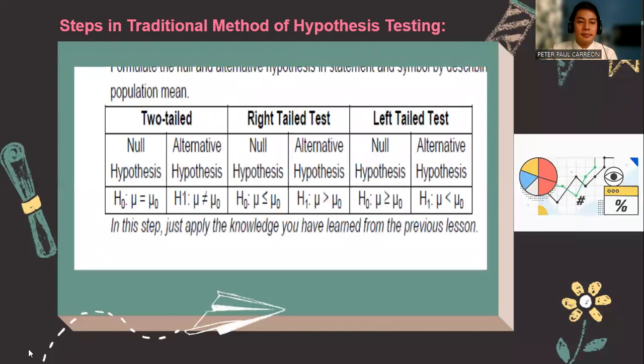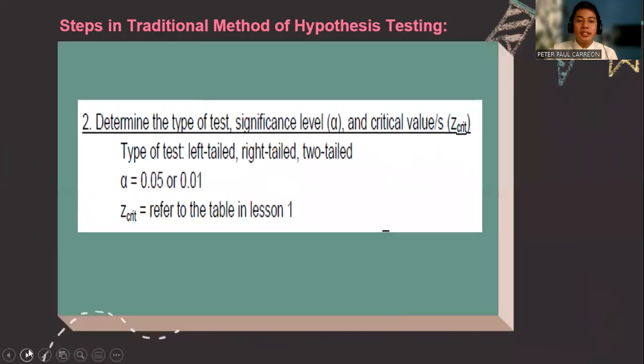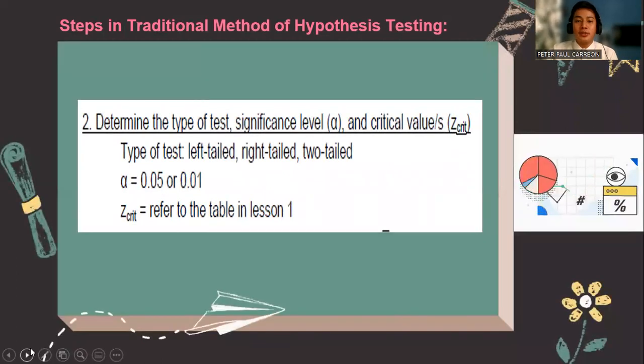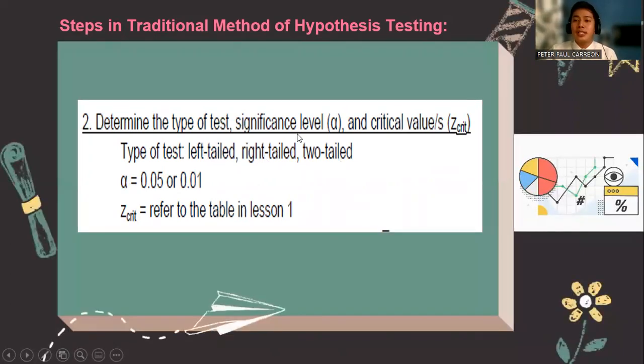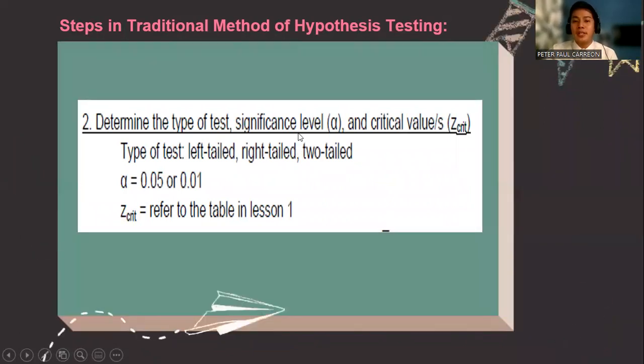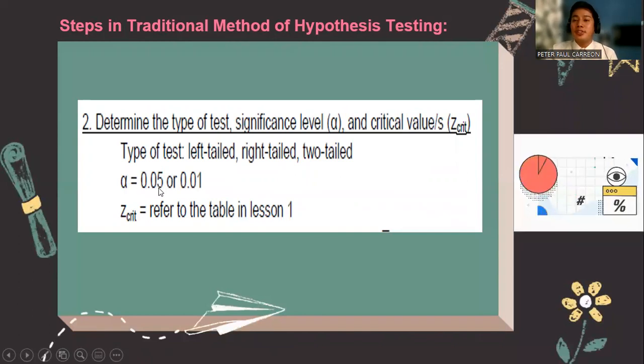Next step is to determine the type of test. Are you going to use left-tailed, right-tailed, or two-tailed test? And what is the significance level? Is it 99% or 95%? Or is it alpha 0.05 or 0.01?